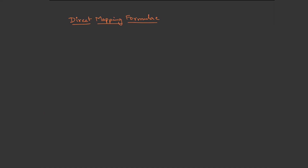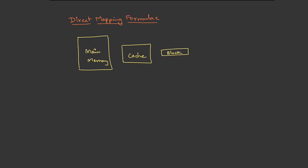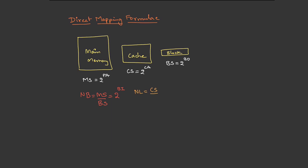Before proceeding to the questions, let me list out the formulae for direct mapping. Some formulae will remain the same as what we learned in main memory and cache. When we know the main memory size, cache size, and block size: memory size is 2^(physical address), cache size is 2^(cache address), block size is 2^(block offset). For main memory, number of blocks = memory size / block size = 2^(block index). Similarly, from cache, number of lines = cache size / block size = 2^(cache index).